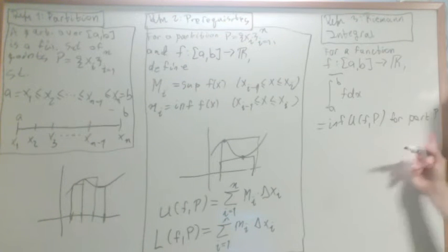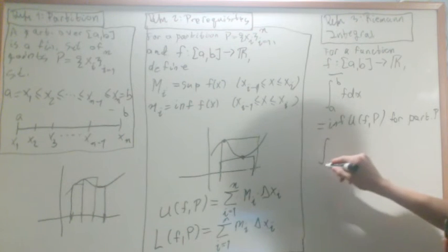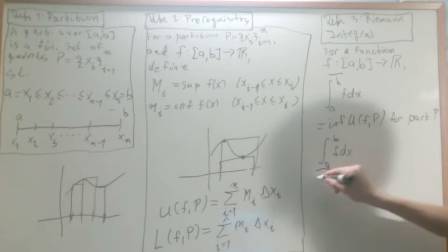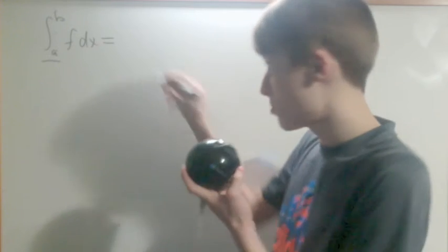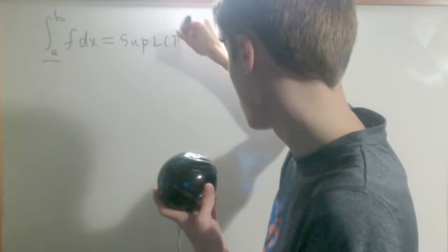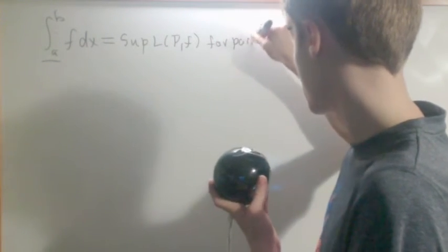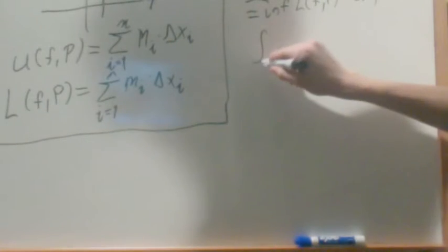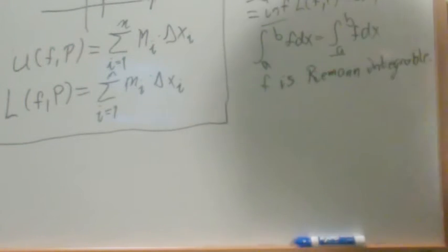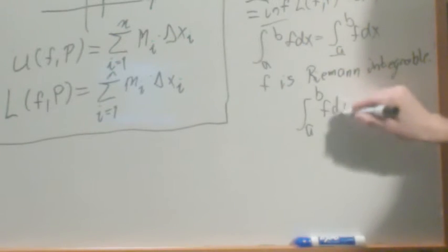So for any partition p, this will have value, and we're taking the infimums of those. And then the lower integral of f dx is going to be equal to the supremum of the lower bounds, sup l, p, f, for partitions p. So if these are equal, f is Riemann integral. And we just call it the integral from a to b, f dx.